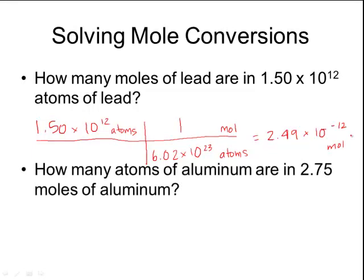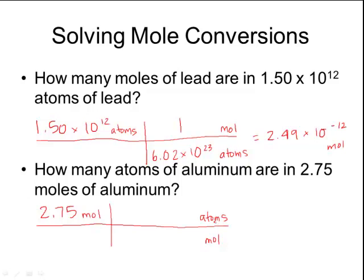I can also do the reverse. How many atoms of aluminum are in 2.75 moles of aluminum? Write down what's given, transfer the mole unit, and go from moles to particles on the mole map. One mole of any substance equals 6.02 × 10²³. Multiplying: 2.75 × 6.02 × 10²³ = 1.66 × 10²⁴ atoms.